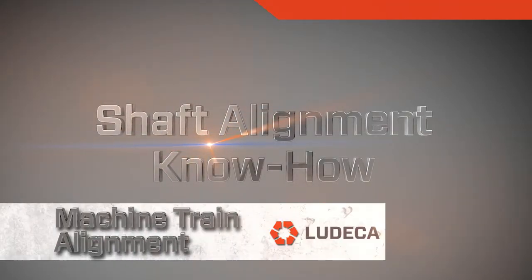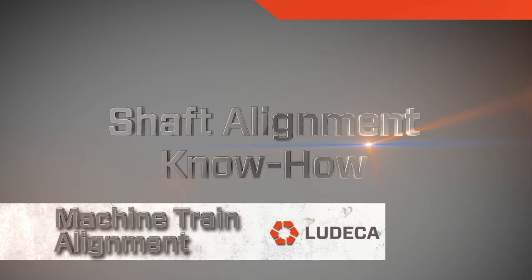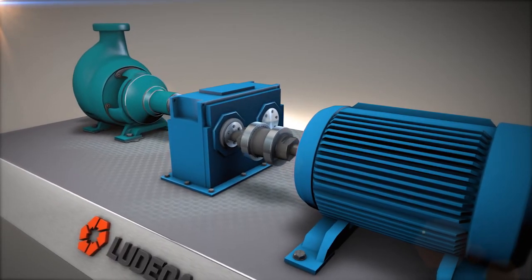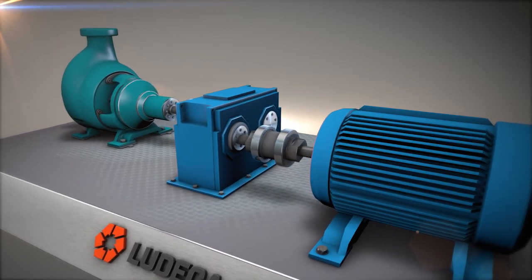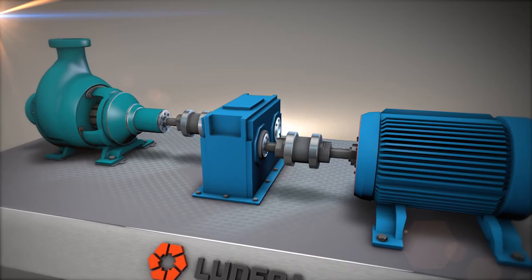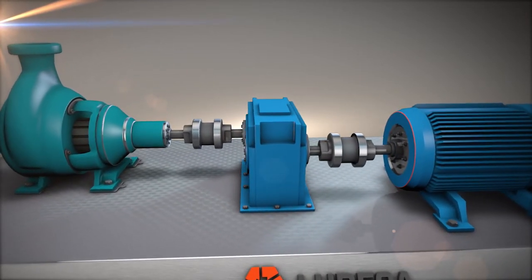Shaft alignment know-how: machine train alignment. A machine train is defined as three or more machines connected to one another through two or more couplings. The most common machine train consists of a pump, a gearbox, and a motor, like the one we see on the screen.